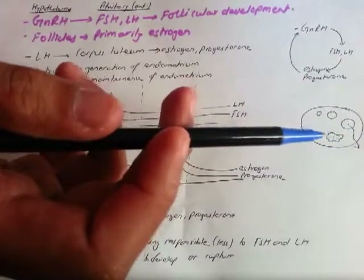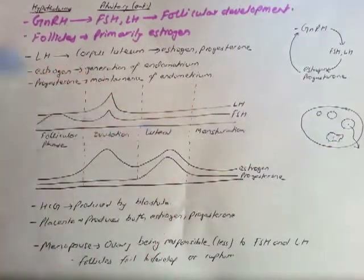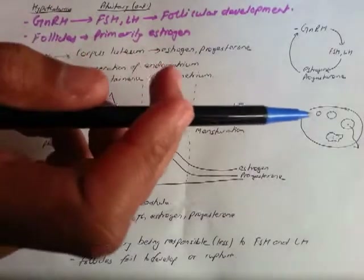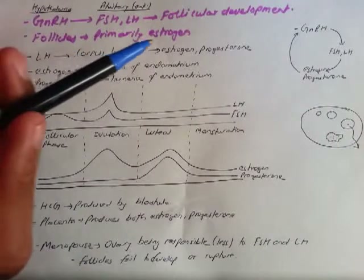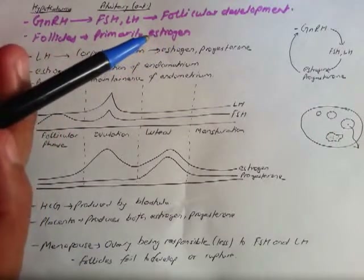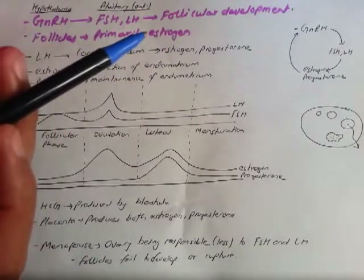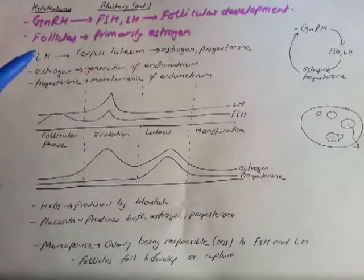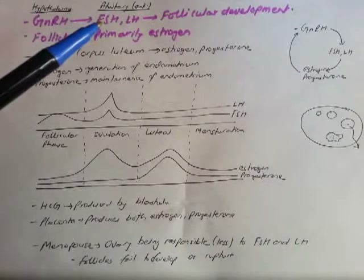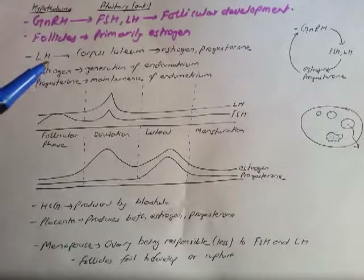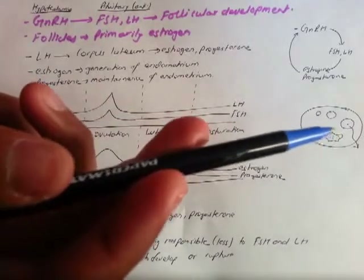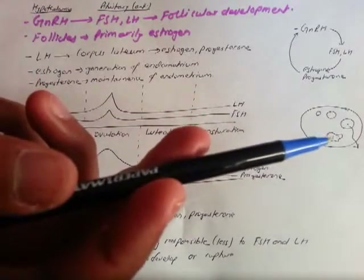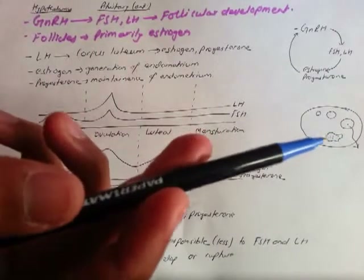After the egg is released, the follicle changes into something called the corpus luteum, which we'll come back to. These follicles primarily secrete estrogen — sometimes written as 'OES' or starting with 'ESTR.' LH helps to maintain the corpus luteum after it's formed, and we'll come back to this later as well.